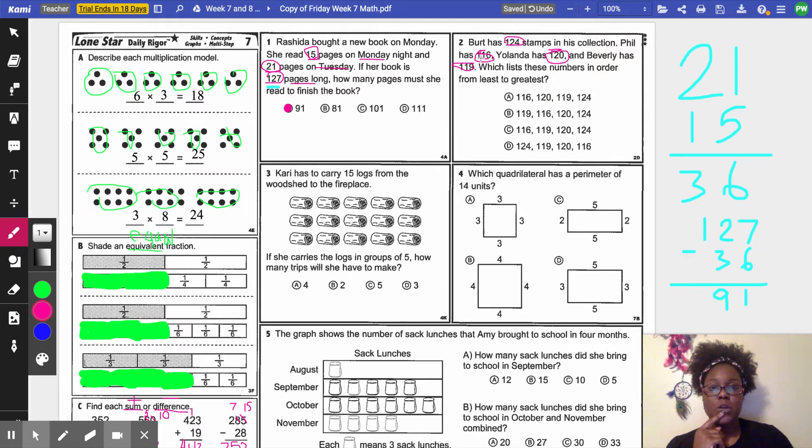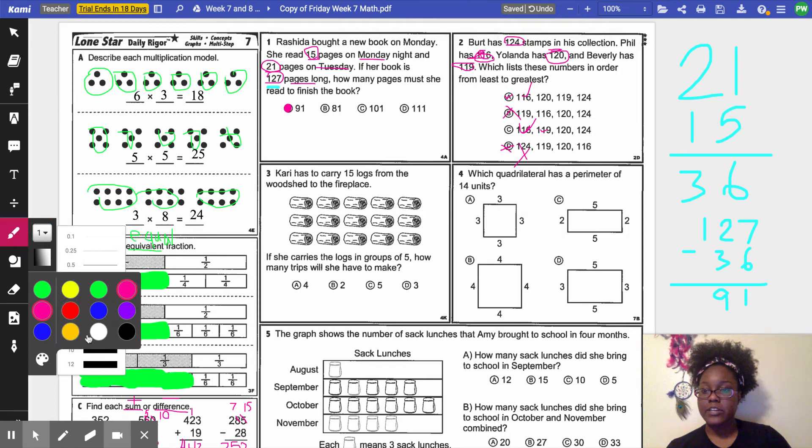I'm looking at these numbers and I know 116 is the smallest. So I know it's got to start with 116. So A starts with 116. B does not, so it can't be B. C does, but D doesn't. So I'm looking at letter C and letter A. So I know that once I use 116, I have 119, 120, 124. 119 would come next. So I know it has to be C because 119 is next on this one, and A has 120. That's not correct. So I'm going to go ahead and bubble in letter C.